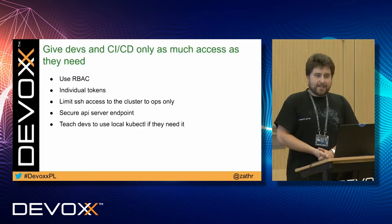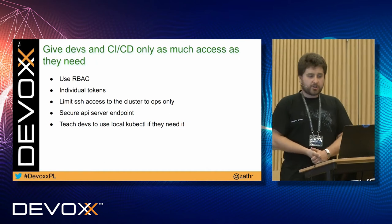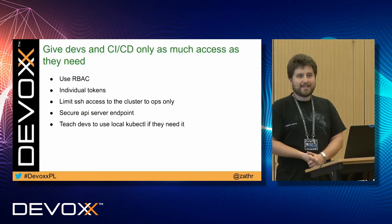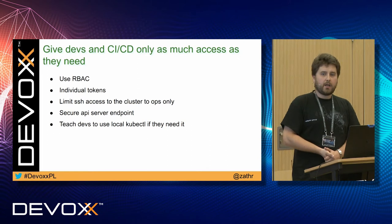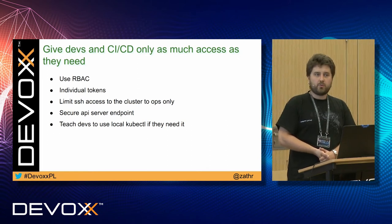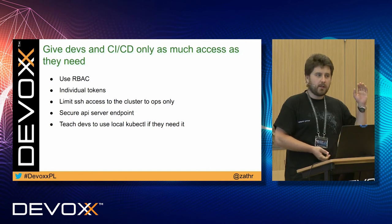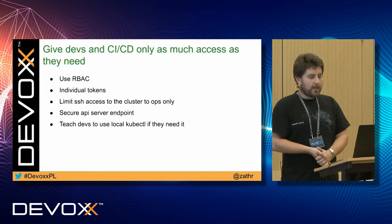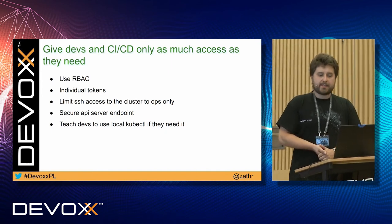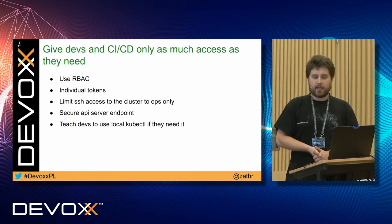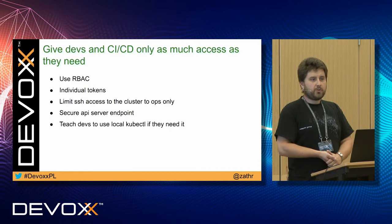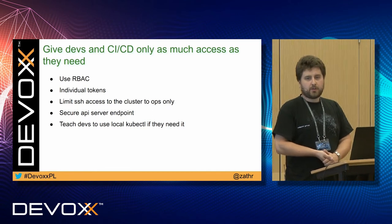The next question is security. I would suggest using role-based access control. Assign each of your team members individual tokens, and the same applies to external processes like a continuous integration server. Rotate them accordingly. Limit your SSH access to your cluster to essential personnel only. The others should connect to the cluster through a secured API endpoint. You will also have to train your team to use local kubectl to access that endpoint.